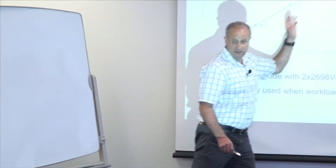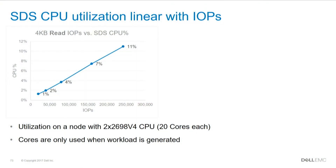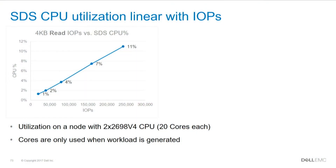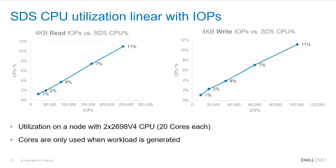We only use CPU when you need the IOPS. On this chart, CPU utilization is on the Y axis and IOPS on the X axis. You see that if you're not running at 250,000 IOPS, you're not consuming all the resources. At a more reasonable workload of 100,000 IOPS, you're only using 4% of your CPU resources — a minimal amount. Same on reads and writes.